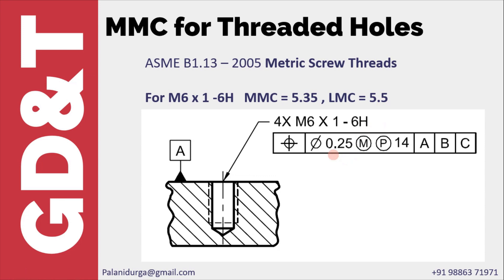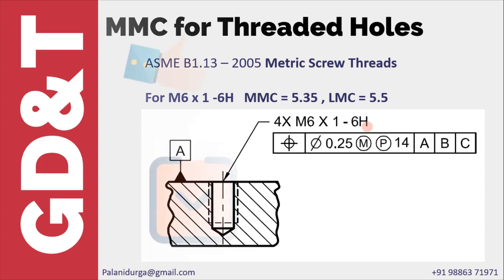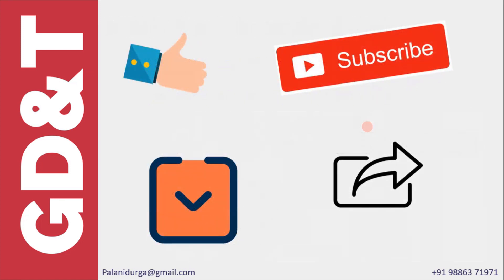Here I have explained about internal threads. Similarly, you can apply this for external threads as well, where the tolerance class would be 6g. You would refer to the ASME B1.13 tolerance standard to get the tolerance values and determine the maximum material condition and least material condition. Thank you.